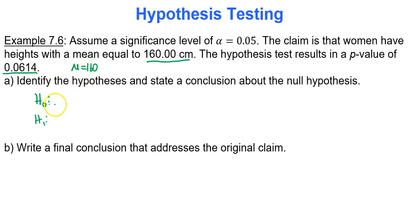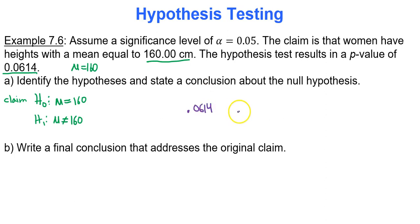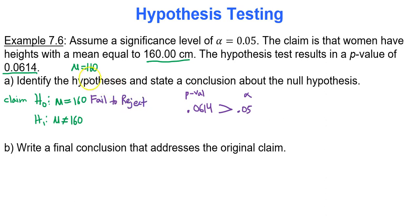A mean equal to 160 contains equality, so it goes with the null hypothesis. The claim is the null hypothesis. Comparing the p-value to alpha: 0.0614 is greater than 0.05. Therefore, we cannot reject the null hypothesis — we must fail to reject the null hypothesis. We fail to reject our claim.